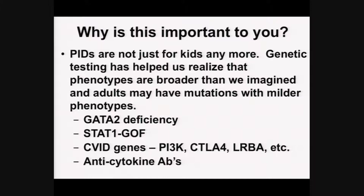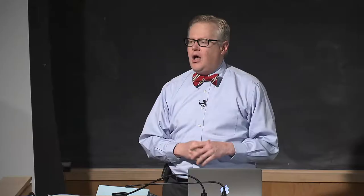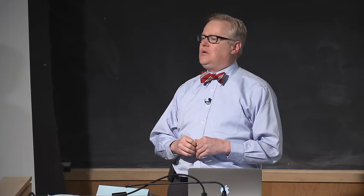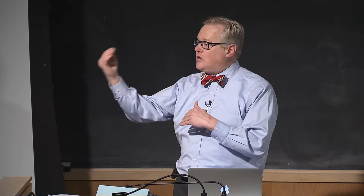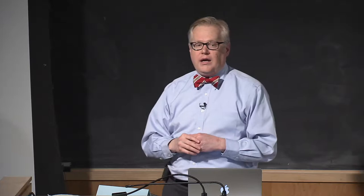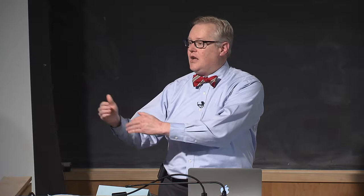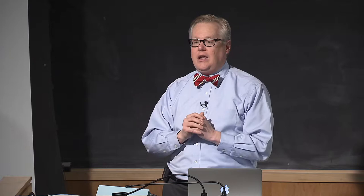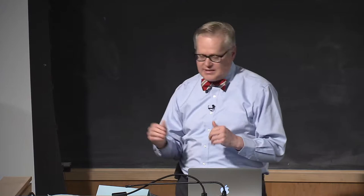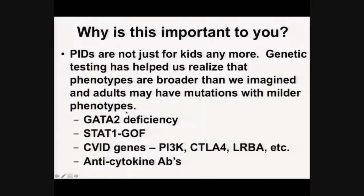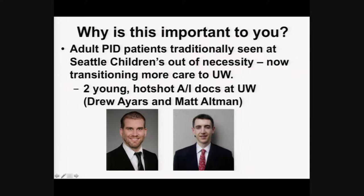These aren't just diseases for kids anymore. As we've done next-generation sequencing and exome sequencing, we're finding patients with milder mutations in classic immunodeficiency genes who live into adulthood and may present as lupus. For example, a colleague found an adult patient in her 30s with lupus who has a hypomorphic mutation in RAG1/RAG2, typically associated with severe combined immunodeficiency in children. We're finding more and more of these cases.